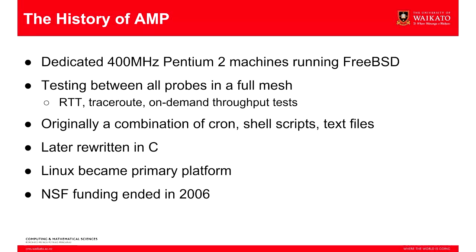When those machines went in, they were state-of-the-art 400 MHz Pentium IIs running FreeBSD. They tested in a full mesh — ICMP latency from every point to every point, plus traceroute data to figure out which links were at fault. Throughput tests were available on demand, since running a full mesh of 160 nodes doing throughput tests would be prohibitively costly. Originally these were shell scripts — a bit of cron, bash, and TCSH running system tools like ping and traceroute — writing data to flat files and sending it around using SCP and rsync.